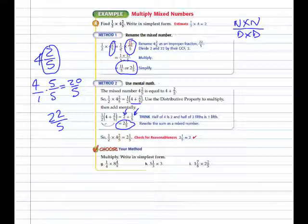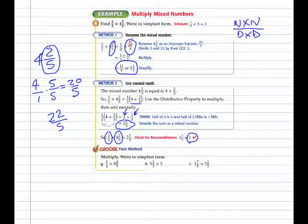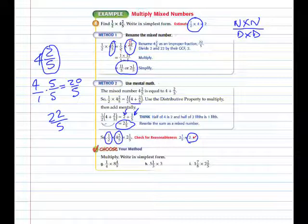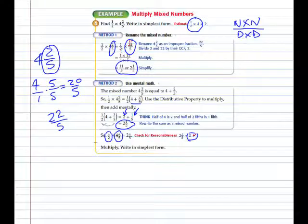Notice they also estimated here. They left one-half the same and rounded four and two-fifths to four. One-half of four is two. Both results are reasonable answers based on those estimates.